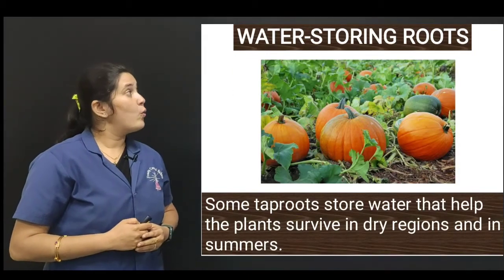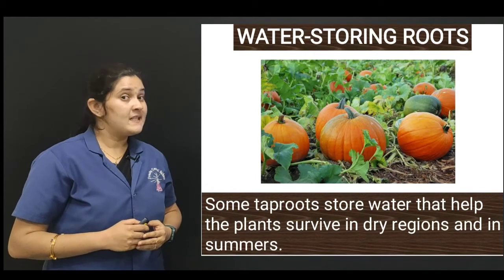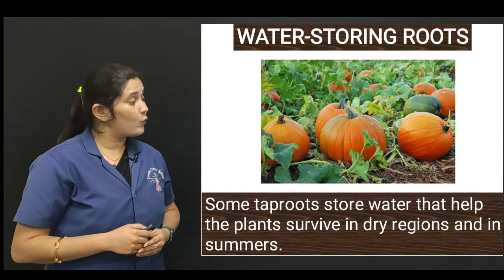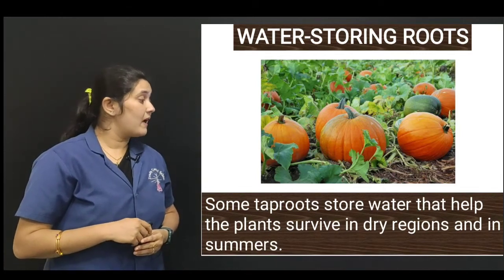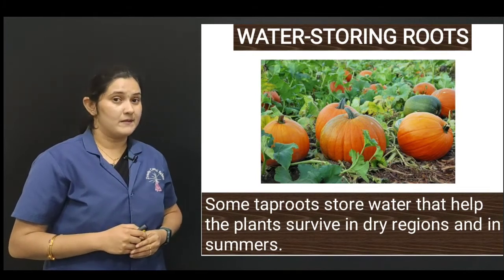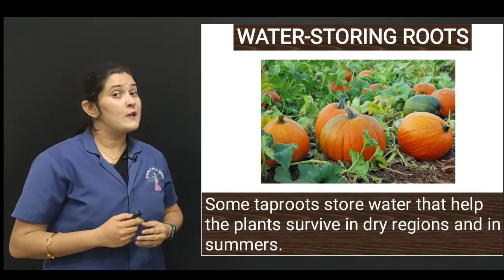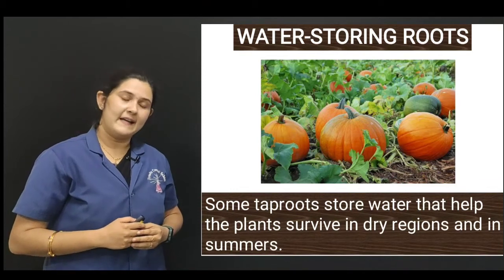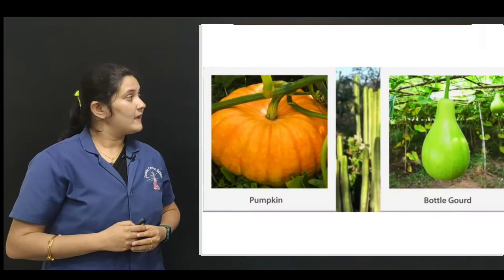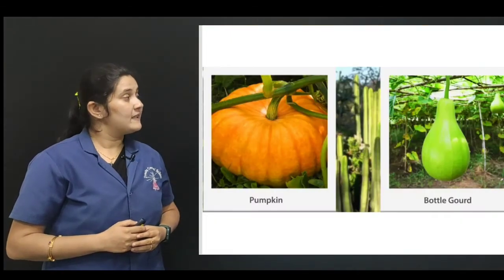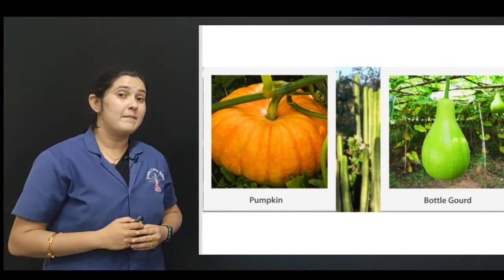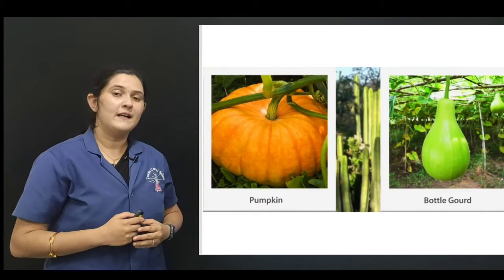Next are water storing roots. These are also tap roots. Some tap roots store water that helps the plants survive in dry regions and in summers. Here you can see the roots of pumpkin and bottle gourd, which are examples of water storing roots.